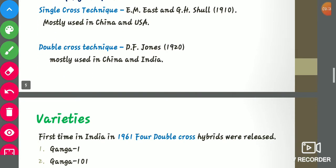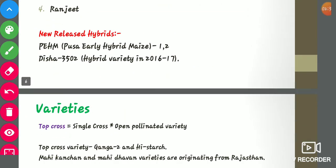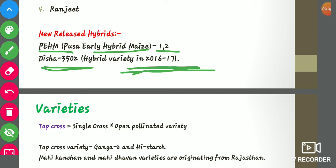In 1961, four double cross hybrids were released in India for the very first time. These four were Ganga 1, Ganga 101, Decan, and Ranjit. Some new release varieties are PEHM, Pusa Hybrid Maize 12, and Disha 3502, which was released in 2016-17 — this is the most recent one.